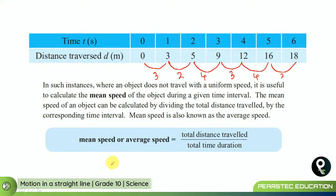Therefore, mean speed or average speed is calculated as total distance traveled divided by total time duration. Here, the total distance traveled is 18 and total time duration is 6. So, the mean speed of this particular chart is 3 meters per second.